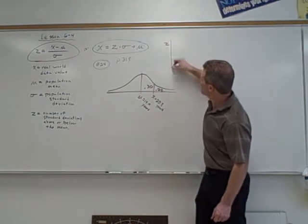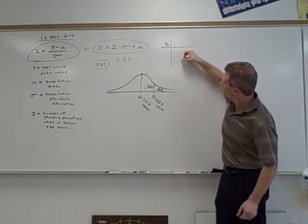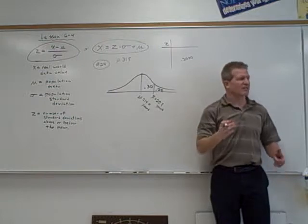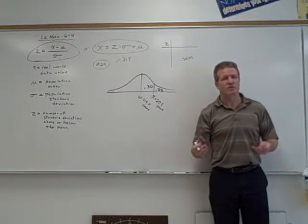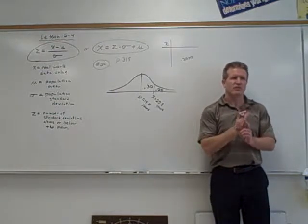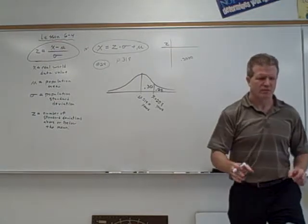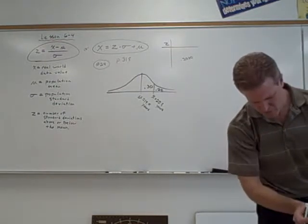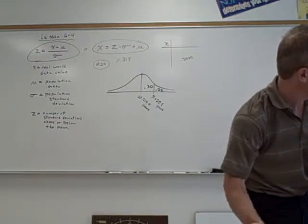So I can go into my z-chart, look for 0.3000. If I can't find that exact number, I find whatever's closest to it. If it's exactly between two numbers, I go to the largest number. So if you look that up on your z-chart, which I don't have handy right now. Let me grab one.